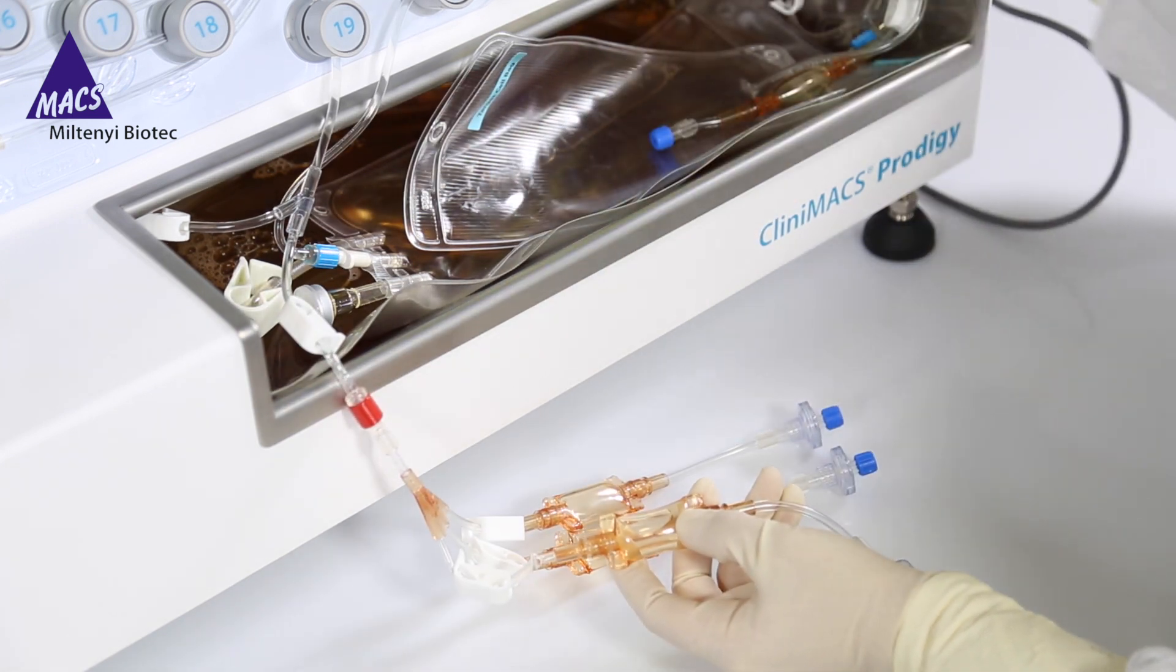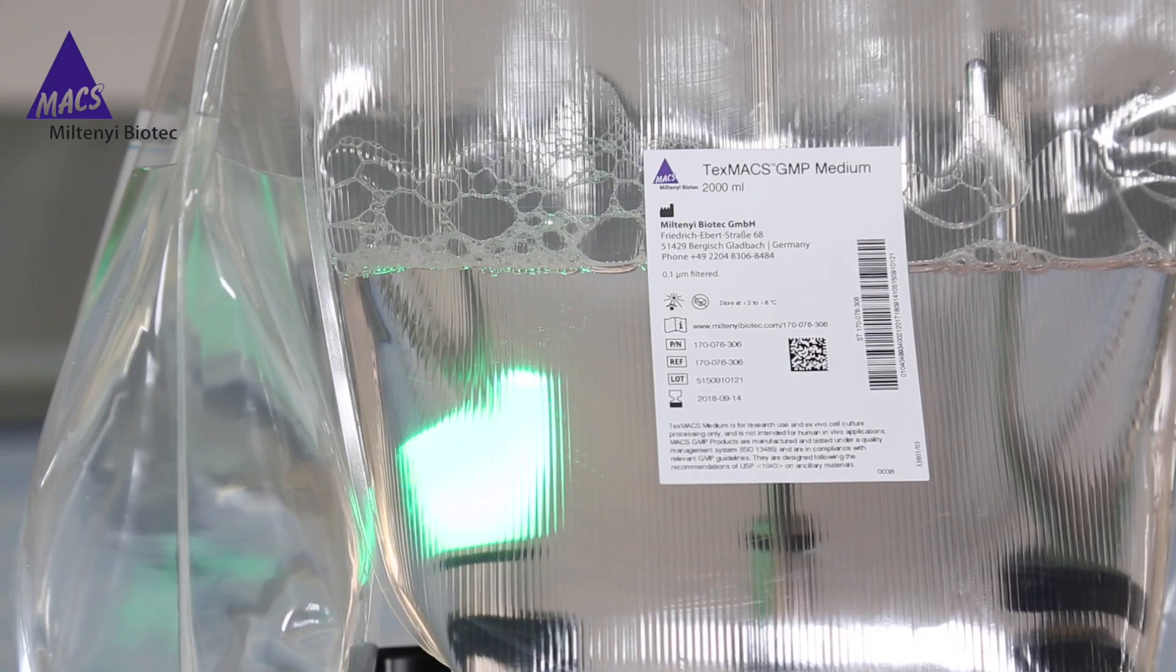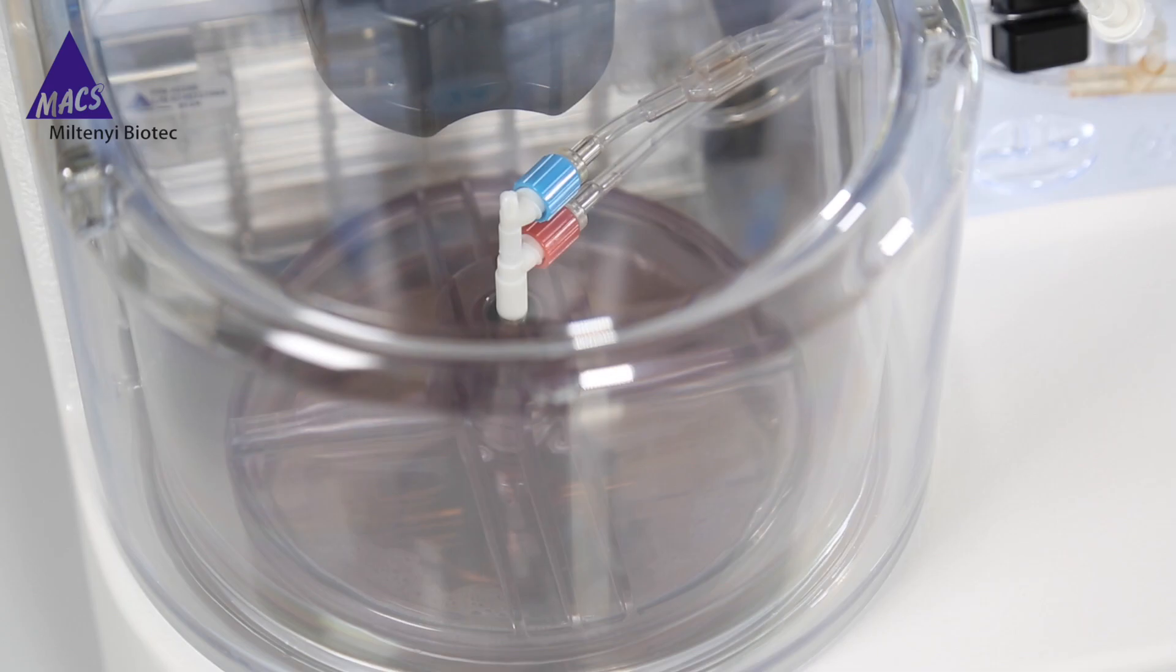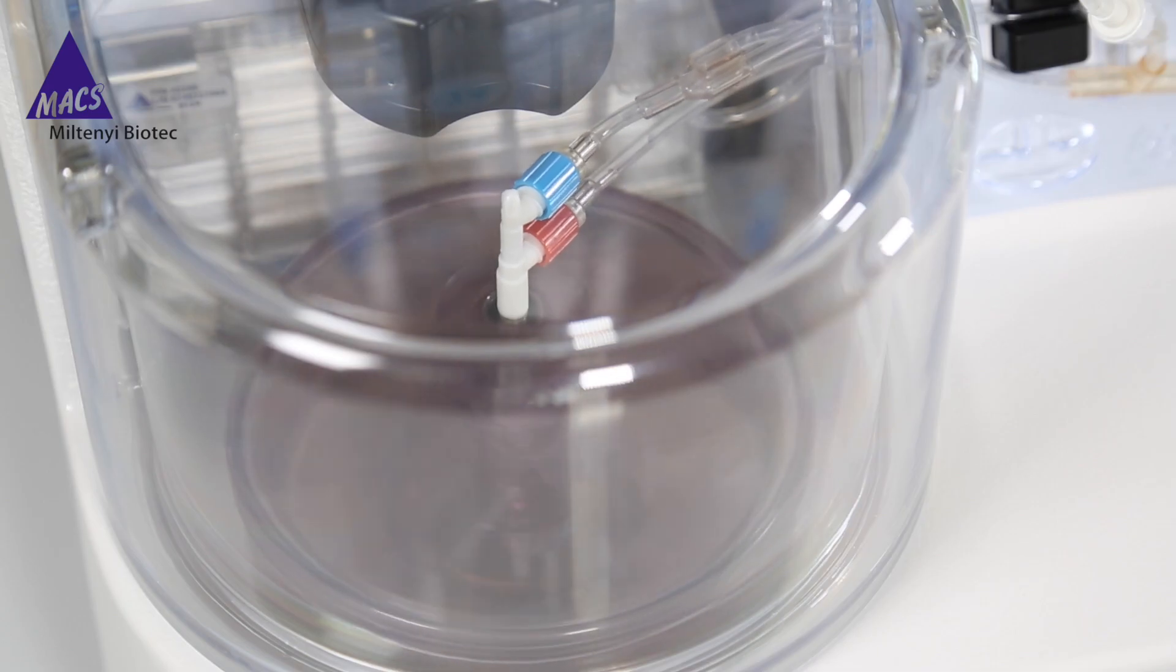The culture is fed by regularly adding and exchanging cell culture media. When the culture volume exceeds 150 milliliters, the cultivation is switched from a static to an agitated culture.